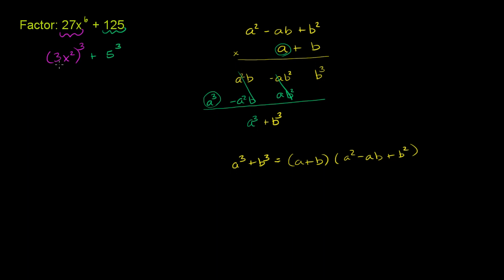So it never hurts to review. Let's multiply 3x squared times 3x squared times 3x squared. That is literally equal to 3 times 3 times 3 times x squared times x squared times x squared. This part right here is 27. x squared times x squared is x to the fourth times x squared is x to the sixth.